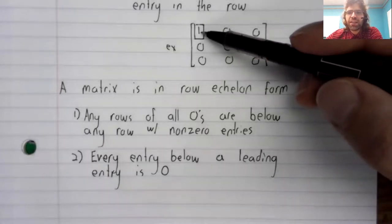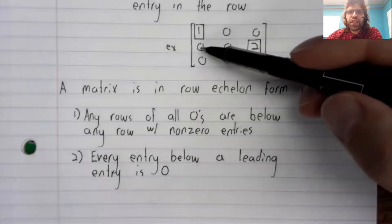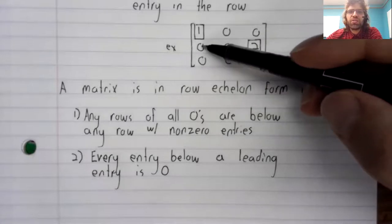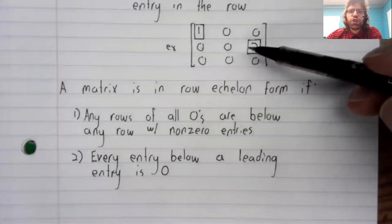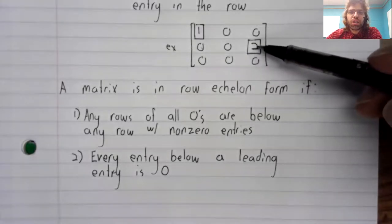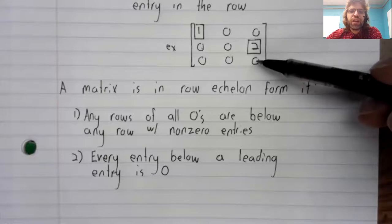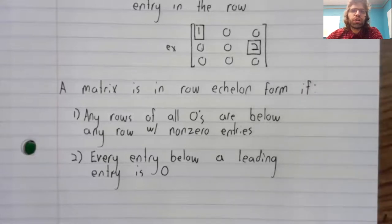This row has one as its leading entry, and we see only zeros below that one. This row has two as its leading entry, and we see only zeros below the two.